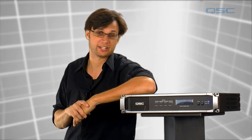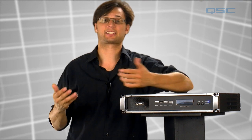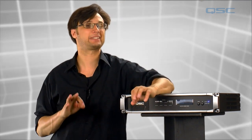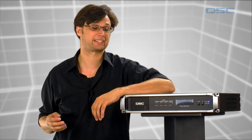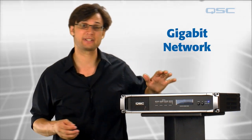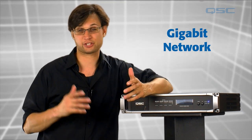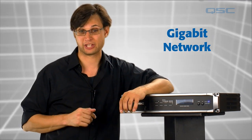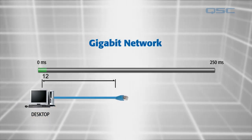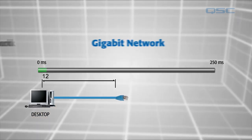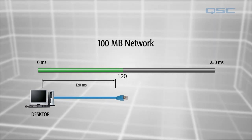The speed of the network is important in letting Q-SYS get its task done. In order to maintain a complete network latency of less than 250 microseconds, a gigabit network is required. Consider: if it takes 12 microseconds for data to travel along a cable on a gigabit network, that would become 120 microseconds on a 100 megabit network.